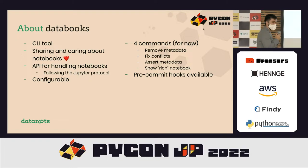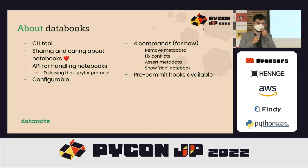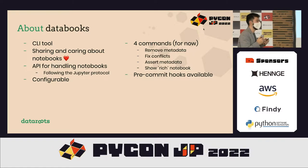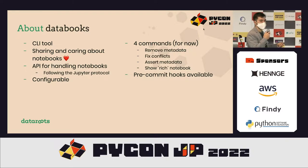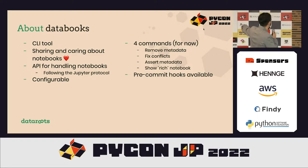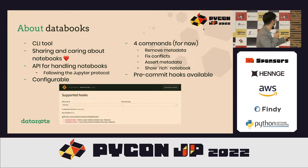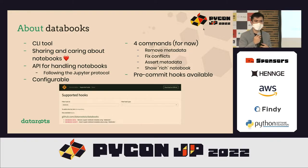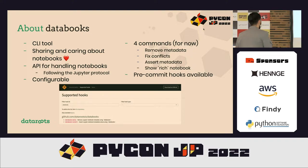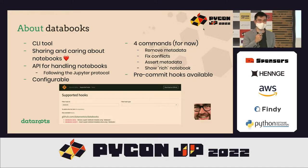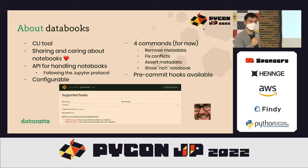It also supports pre-commit hooks. Pre-commit hooks are basically something that runs right before you make a commit. There's a popular package called pre-commit that makes it super easy to use. If you go to pre-commit.com and search for Databooks, you'll see two hooks you can easily use. And basically all of this is just to get Nico to be happy.